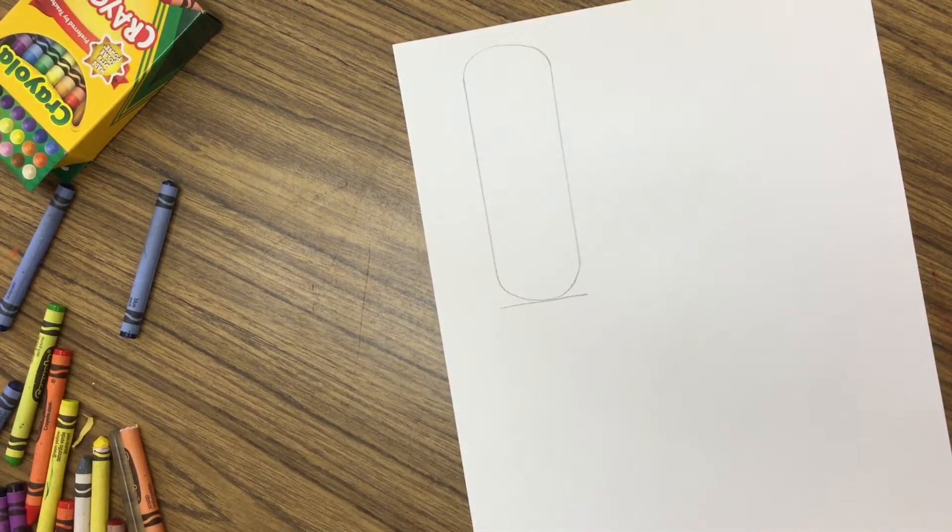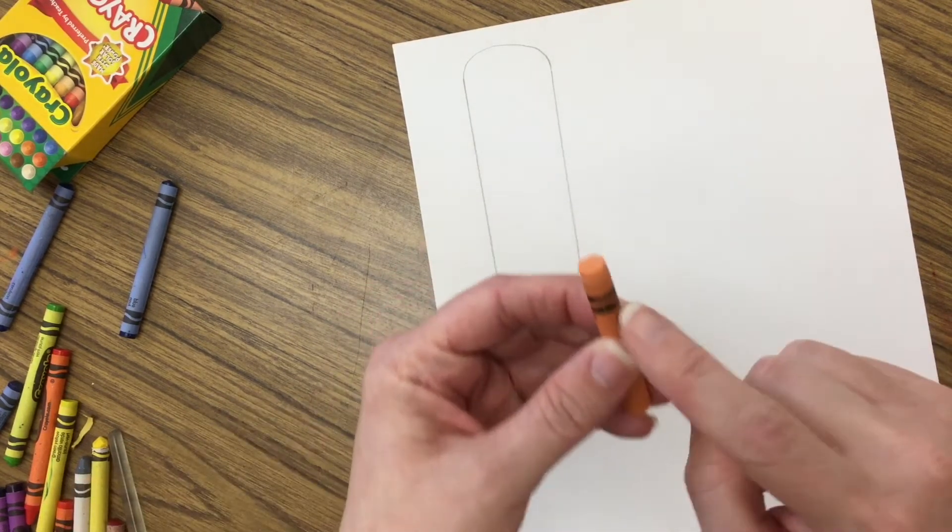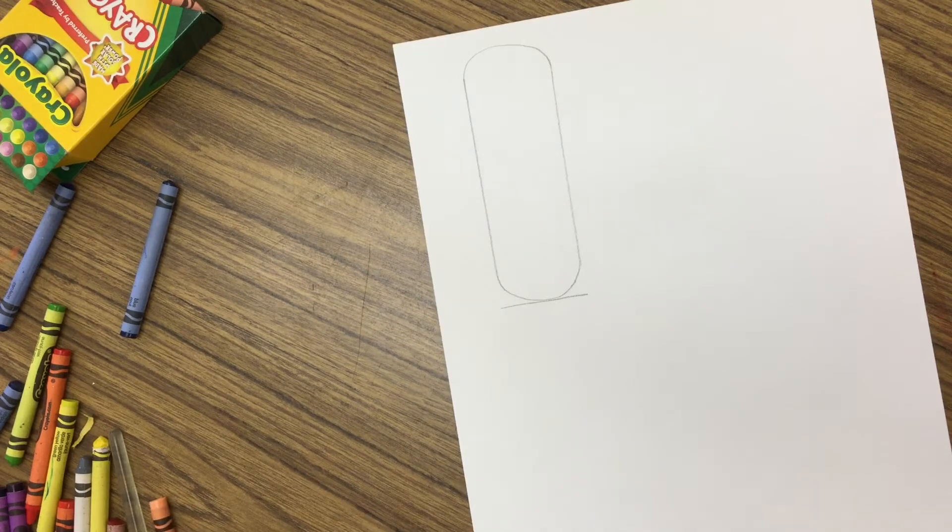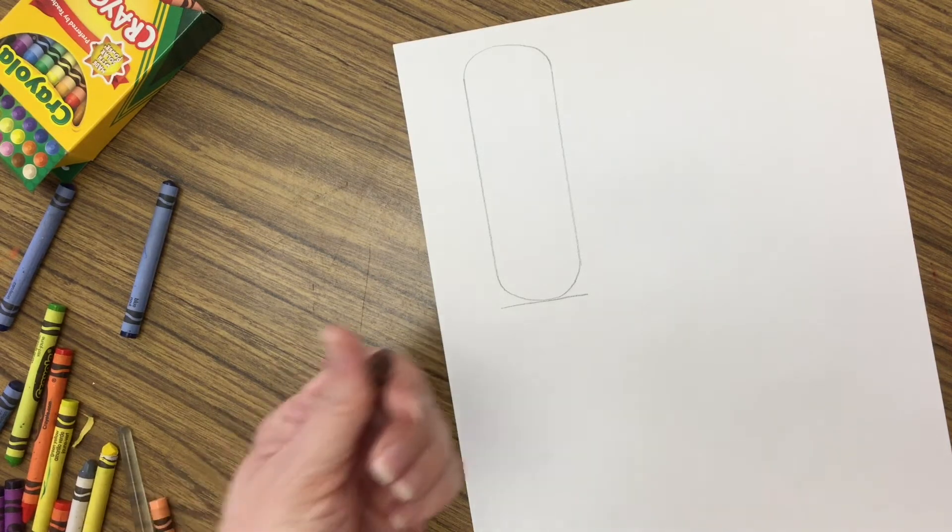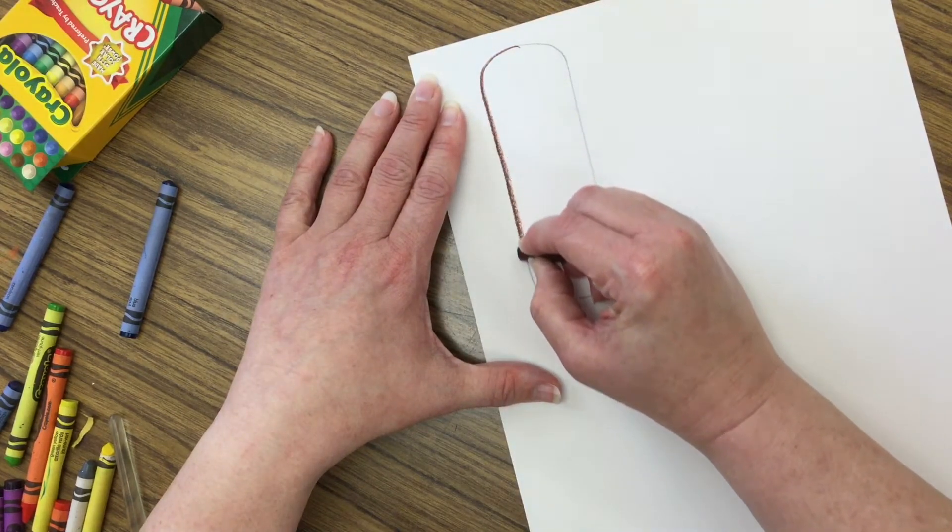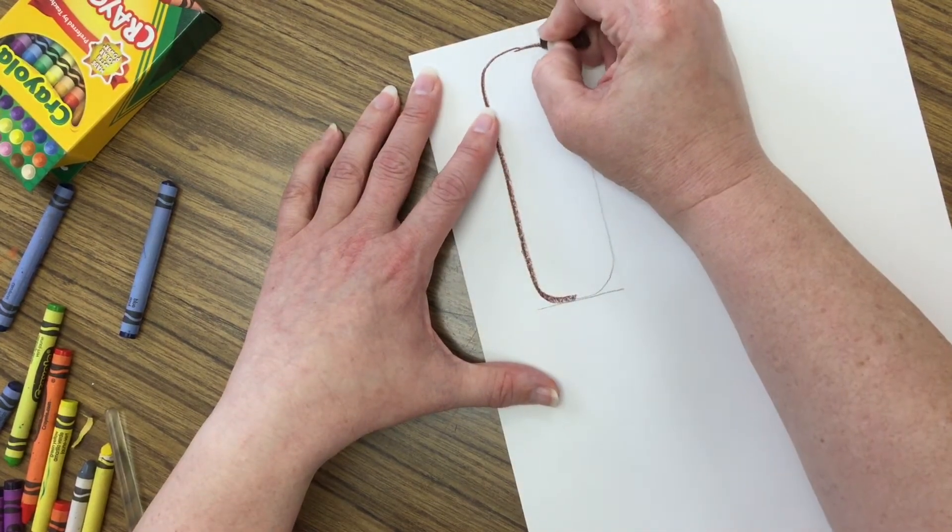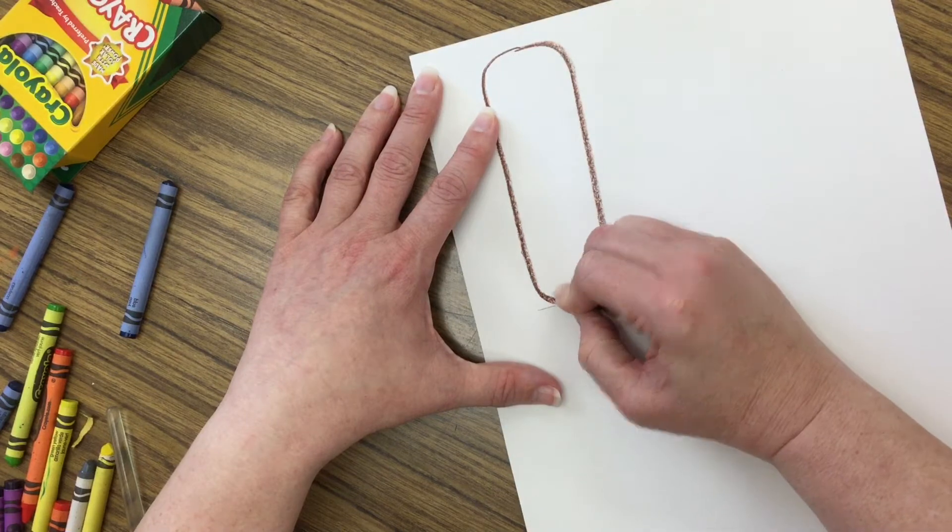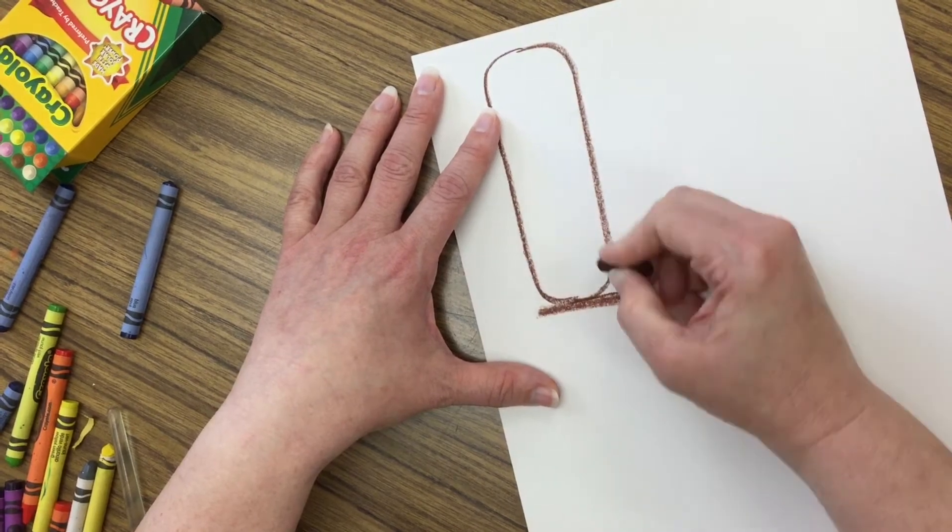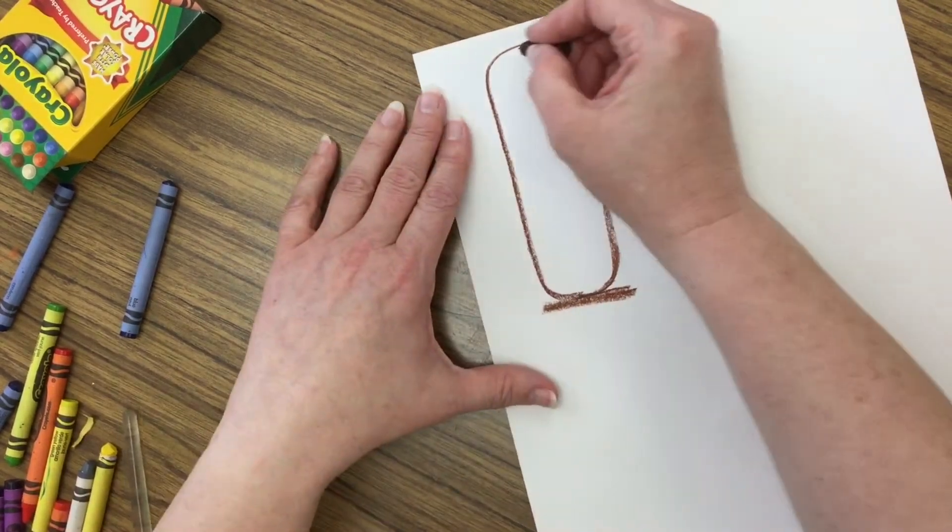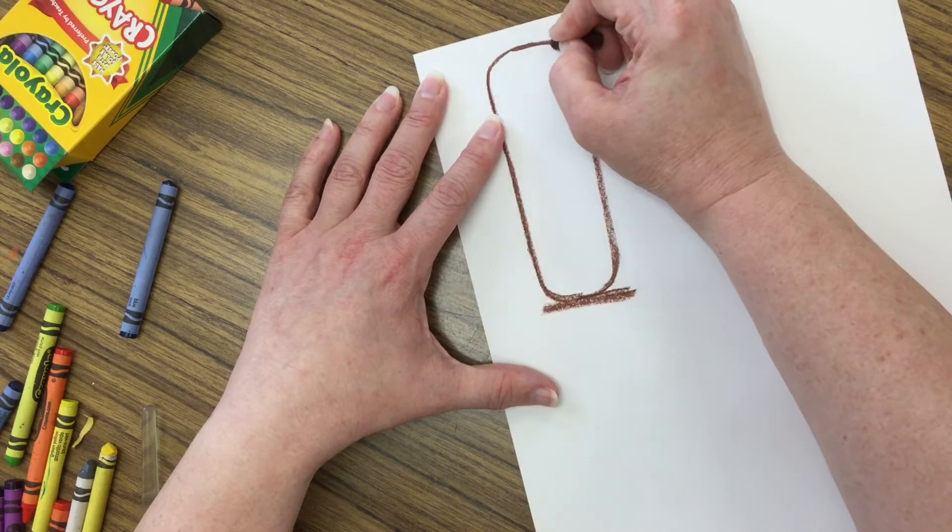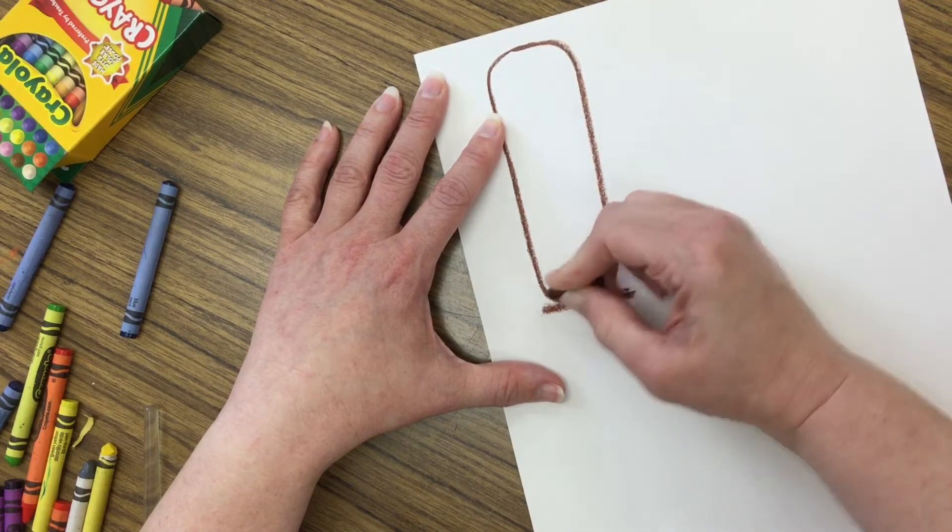I usually draw with peach crayon but if I do that right now you're probably going to have a hard time seeing what I actually write, so I will draw with brown so that you can see better. If you don't have peach you could use yellow, you could use brown like I'm doing. You want to stick with earth tones, maybe some warm colors. If you have no other colors, black would work really good too. So now I've outlined my cartouche shape with my crayon.